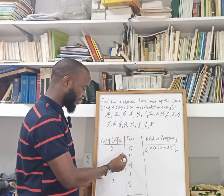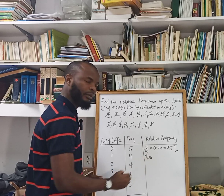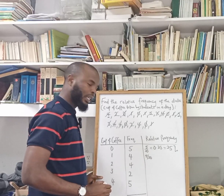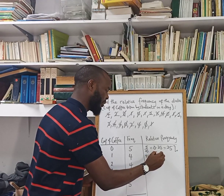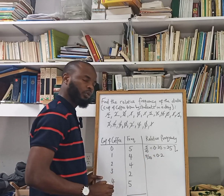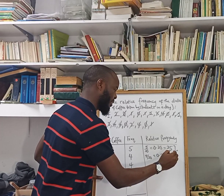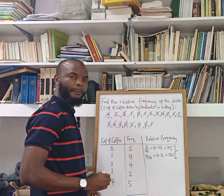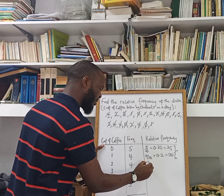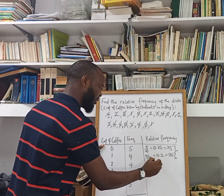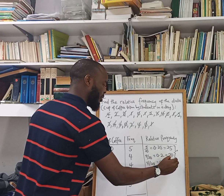For the second category we have a frequency of 4, which is 4 over 20, giving 0.2, which is 20%. For the third category, we also have a frequency of 4, which is again 4 over 20, giving 0.2, the same thing — 20%.